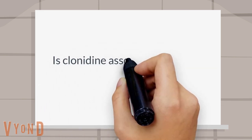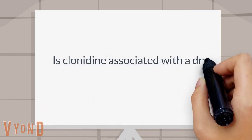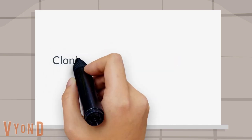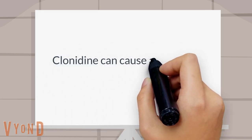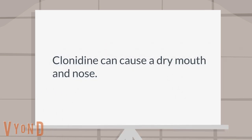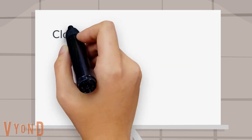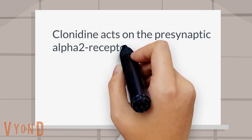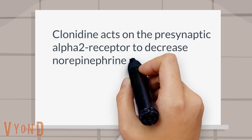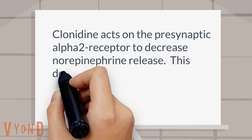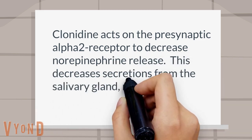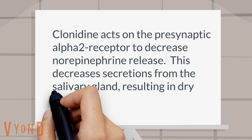Is clonidine associated with dry mouth? Clonidine can cause a dry mouth and nose. Clonidine acts on the presynaptic alpha-2 receptor to decrease norepinephrine release, decreasing secretions from the salivary gland, resulting in dry mouth.